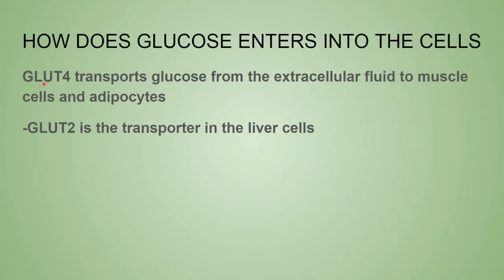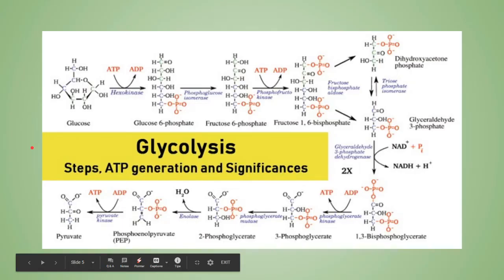GLUT2 is the transporter in liver cells and is not insulin-dependent. Remember: GLUT4 is important because it is insulin-dependent, while GLUT2 is important because it is not insulin-dependent and is present in liver cells. Therefore, insulin favors glucose uptake and utilization by muscle cells, adipocytes, and other peripheral tissues.